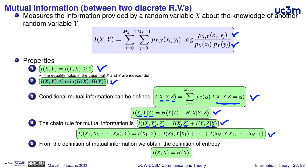Using this basic expression and applying the chain rule, it is possible to obtain the mutual information of several random variables. The last property we mention here is that the mutual information of a random variable with itself is equal to the entropy of that random variable. Because of this, in some cases the entropy is also called the auto-information.